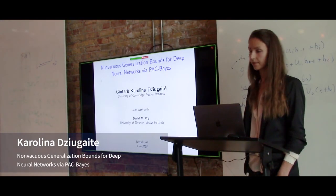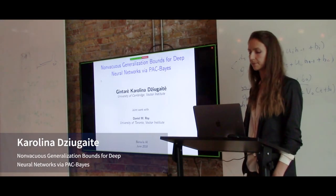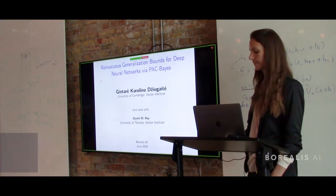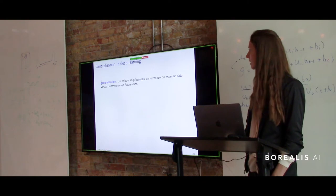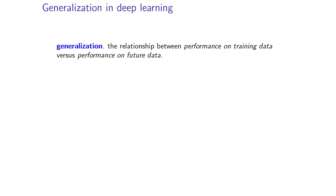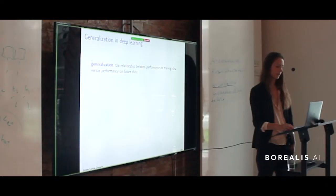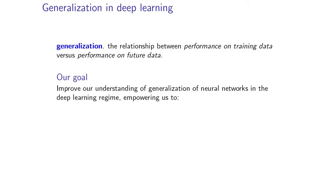I'm going to present my work on studying generalization in deep learning, and this is joint work with Dan Roy. Generalization is the relationship between performance on the training data versus performance on some future unseen data. Our goal is to improve our understanding of generalization of neural networks in the deep learning regime.